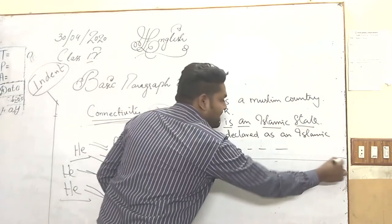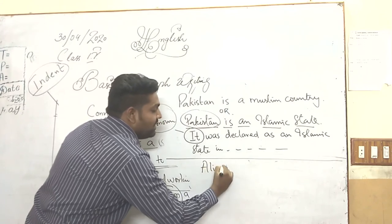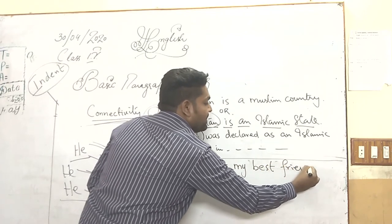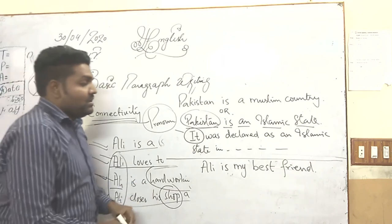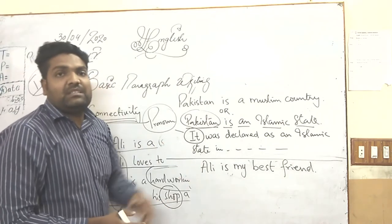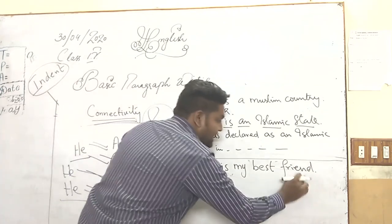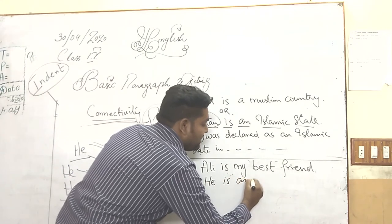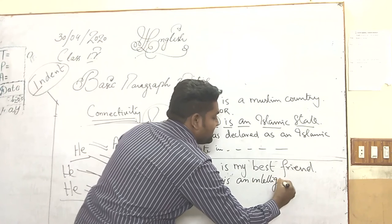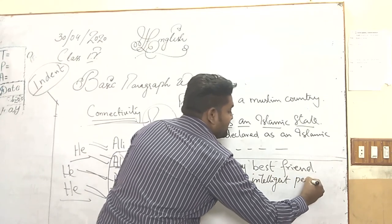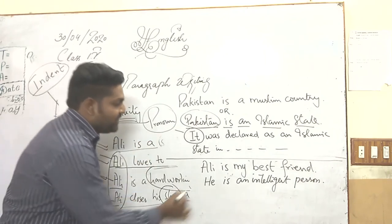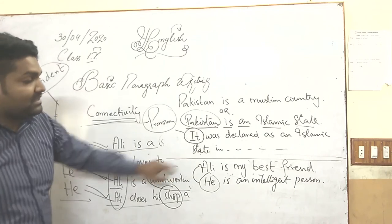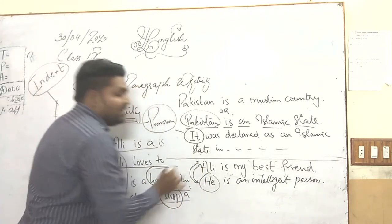For example, I am giving you a second example. Ali is my best friend. So now don't talk about cricket over here — don't say Ali is my best friend and I love to play cricket. No. Ali is my best friend. He is an intelligent person. Who is an intelligent person? The same person about whom I am talking in the first sentence. So there is connectivity between the sentences.